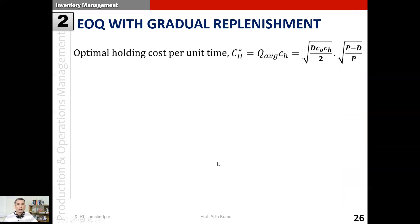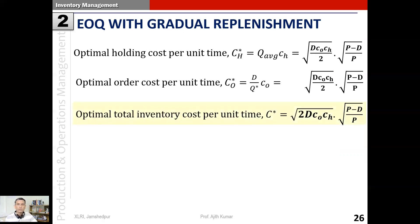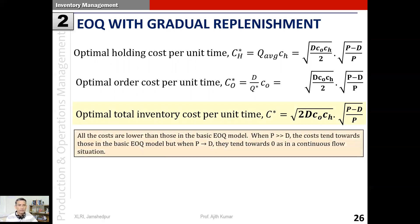Regarding costs: the optimal holding cost per unit time C*_H comes to a specific expression, and similarly the optimal order cost per unit time comes to the same expression - the two are equal, just as in the basic EOQ model. The optimal total inventory cost per unit time is the sum of those two. All costs here follow a formula similar to the basic EOQ model but with an additional factor of square root of (p minus d)/p.